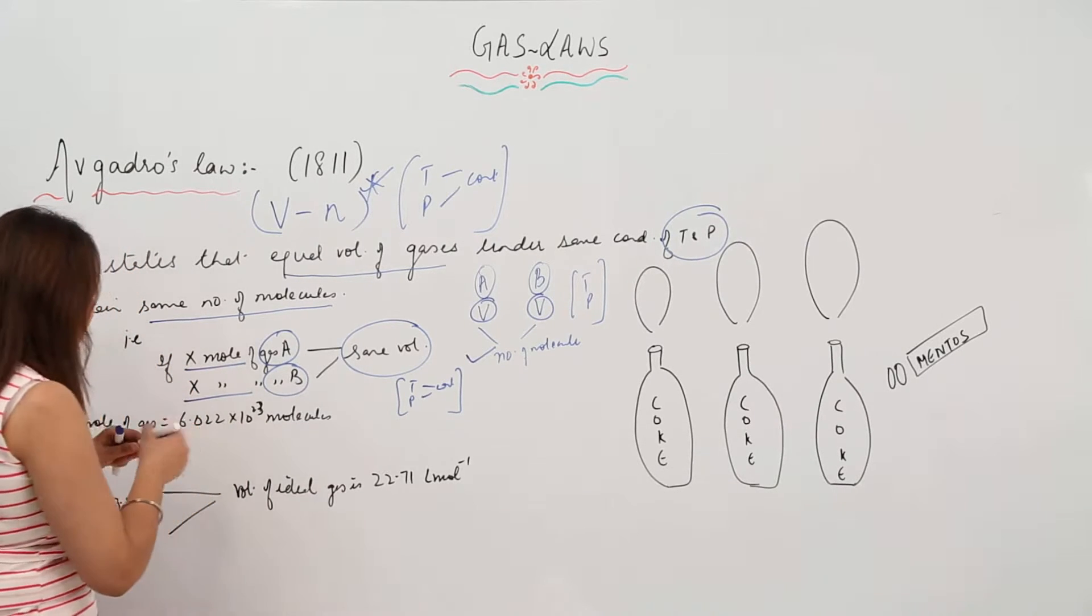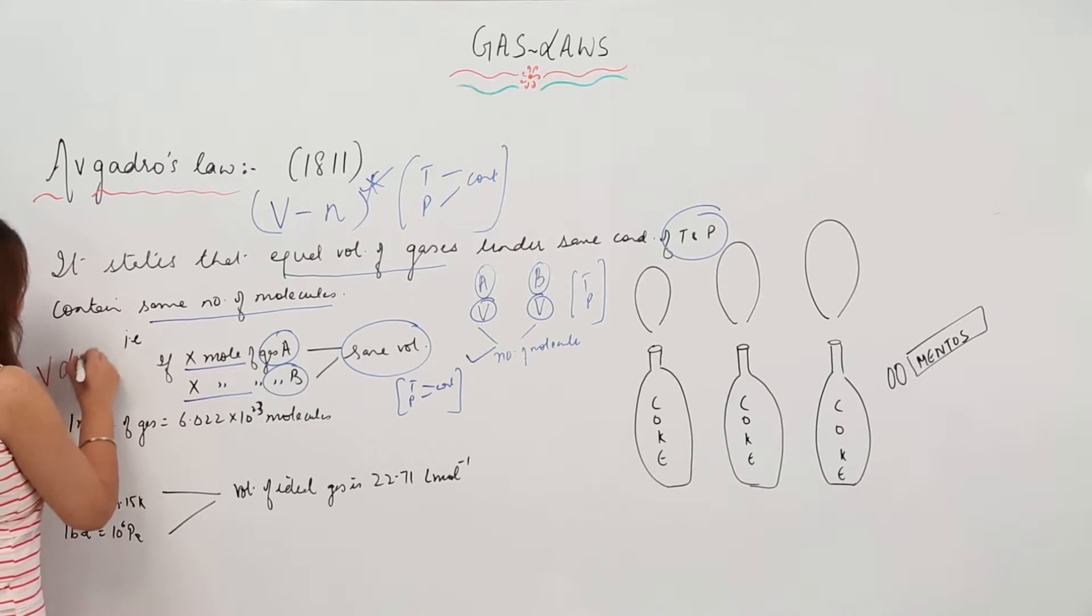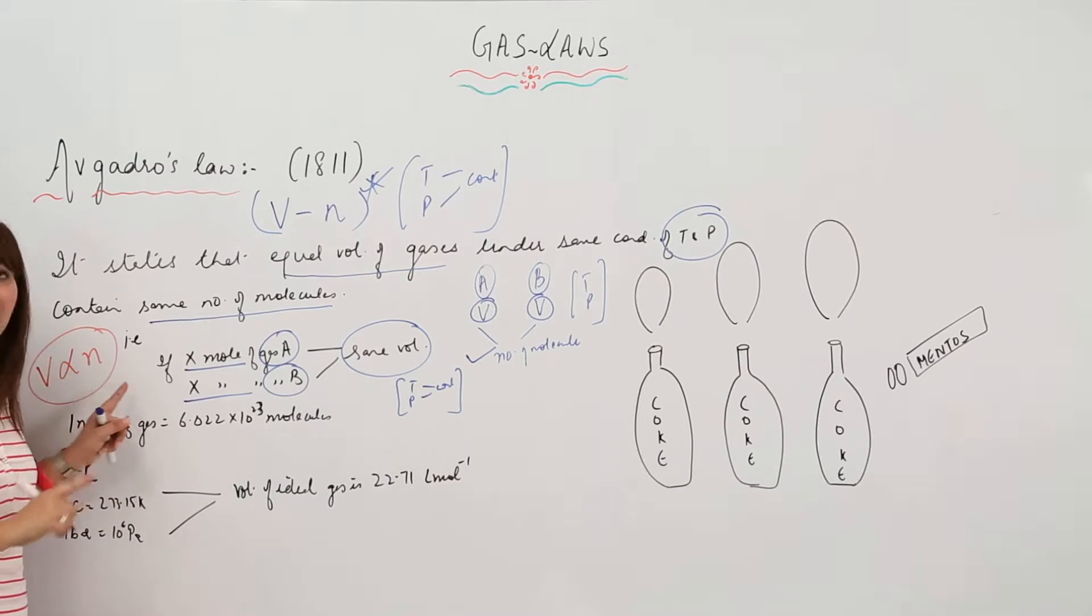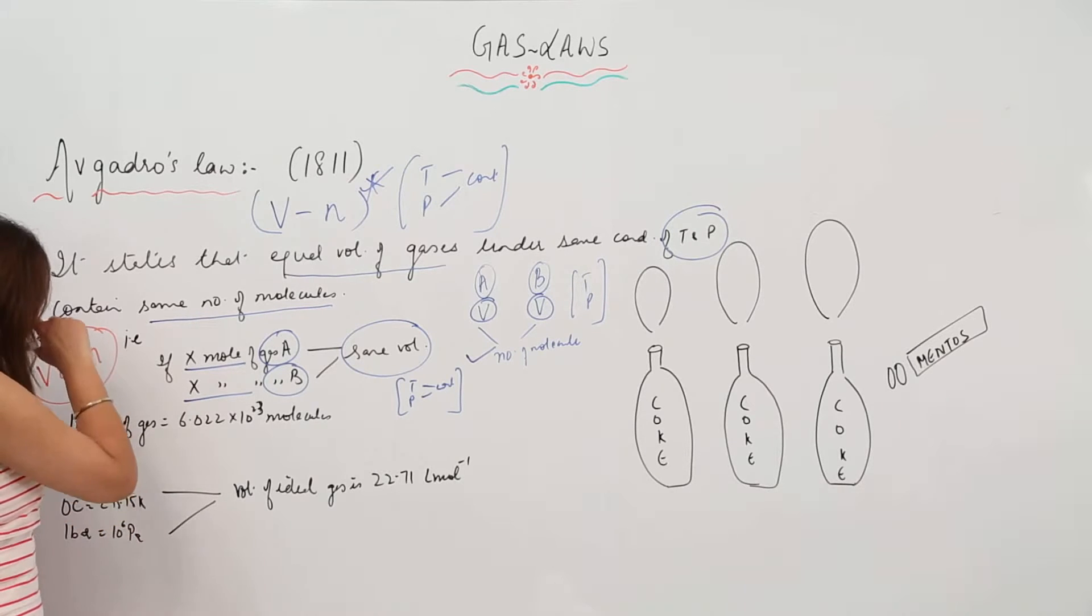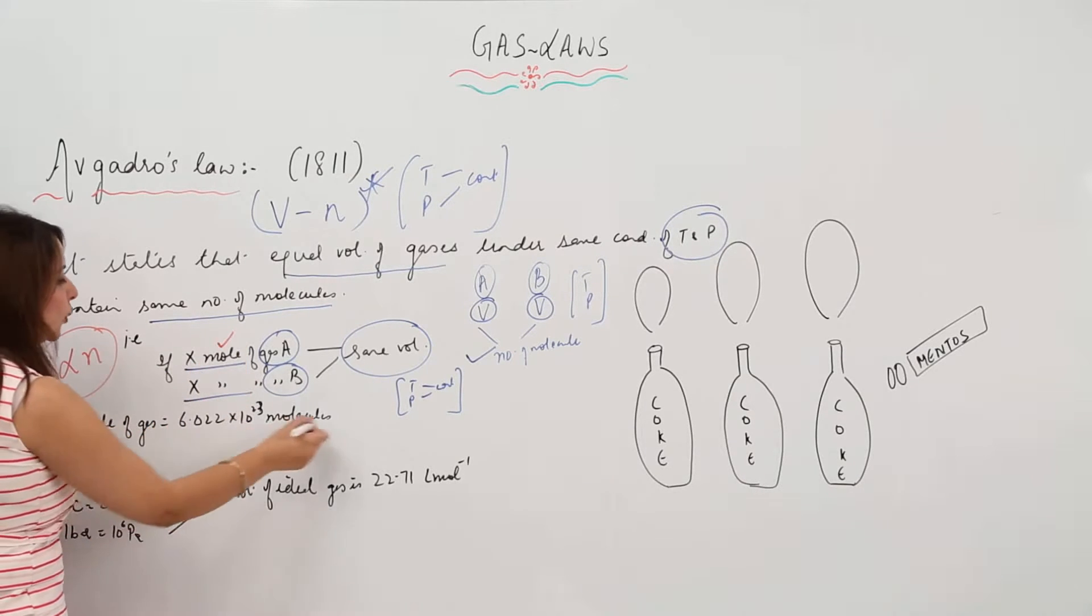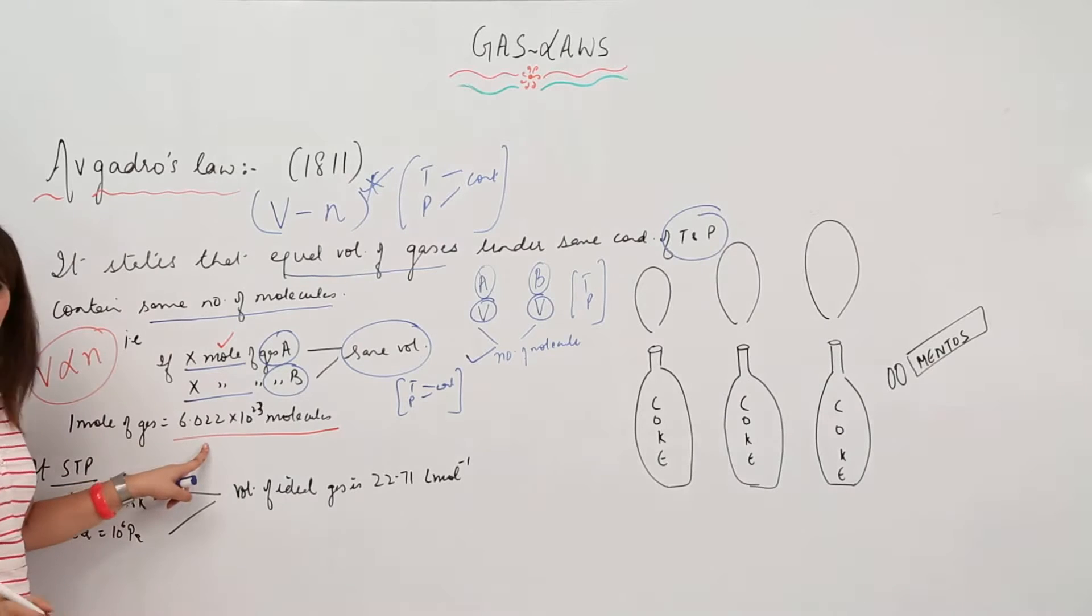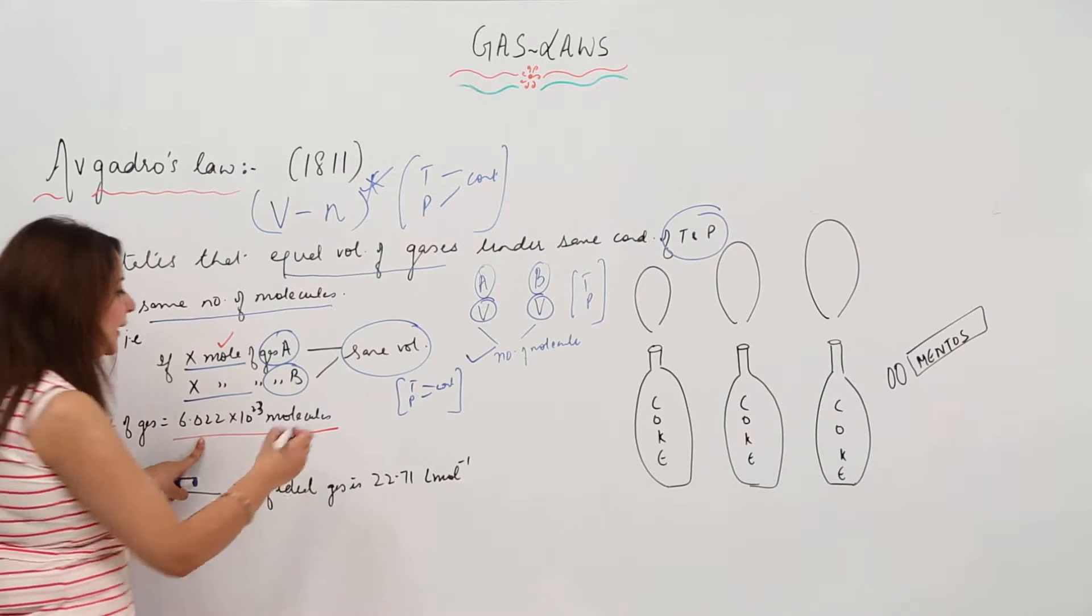So volume is directly proportional to the number of moles of gas. Now when we talk about moles, one mole corresponds to 6.022 × 10²³ molecules - that is Avogadro's number.